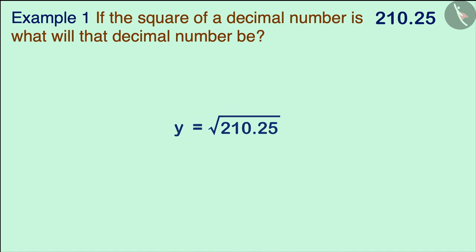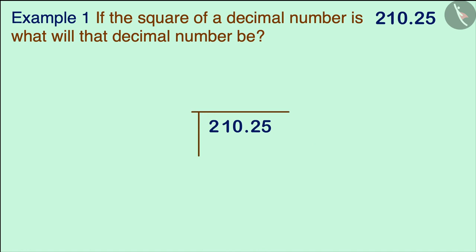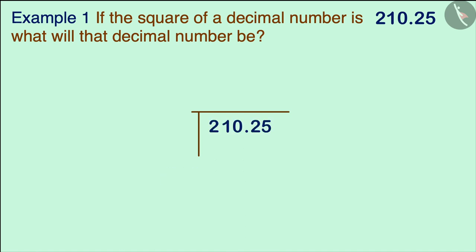To find the value of y we will use the division method. First we draw lines around the given number, and then we place a bar over the number. There are two parts: one part has a whole number and the other has a decimal number.